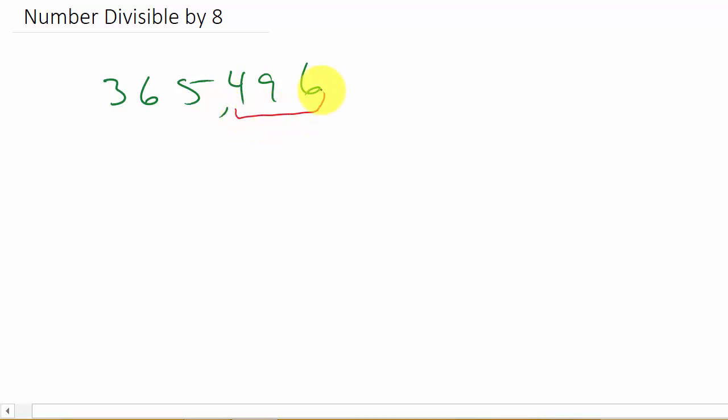And if the last three digits are divisible by 8, then the entire number is divisible by 8. So you just take the 496, divide it by 8.